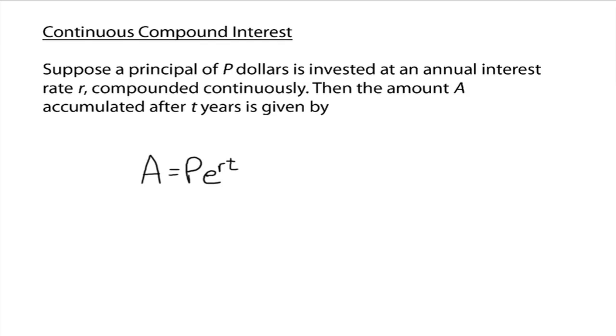Well, that's because this compounded continuously idea, which leads us to this formula down here, A equals P times e to the rt. This idea here is used with other types of applications, say like growth and decay, which would be, you know, like population growth, radioactive decay, you know, things like that, where essentially it's the same formula. And so we're just going to start talking about it now just so we can make sure we know how to use it.